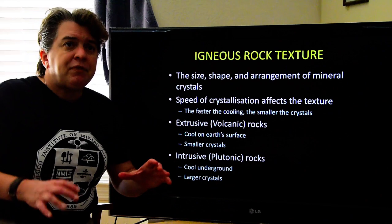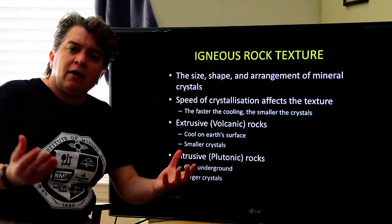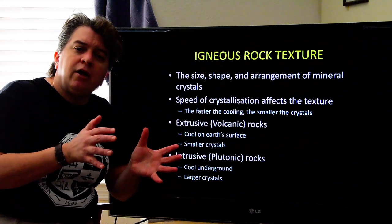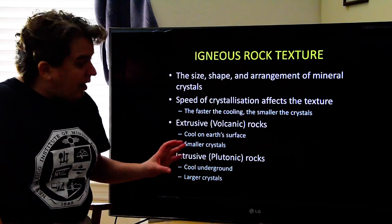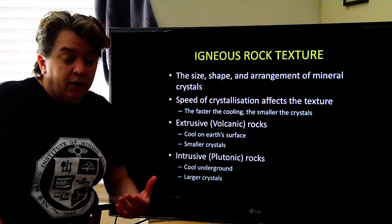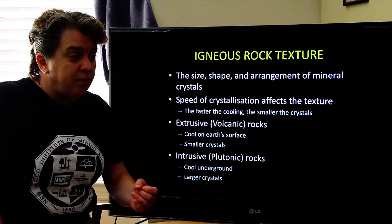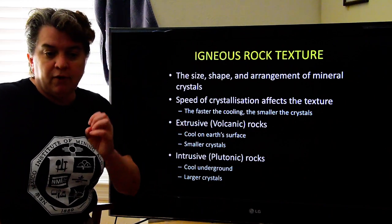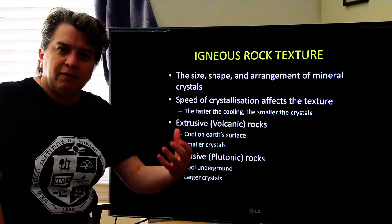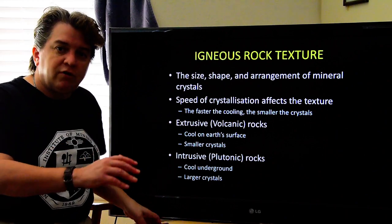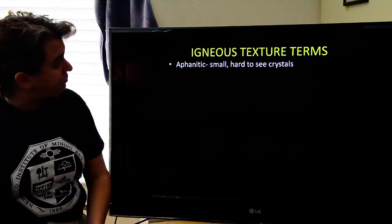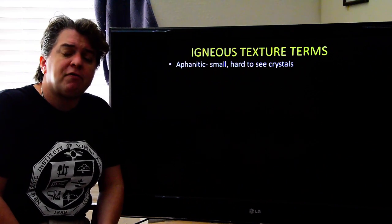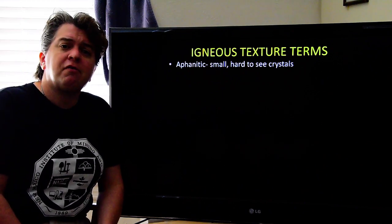Intrusive rocks are surrounded by a lot of other rock, so they're nicely insulated, and the crystals have time to grow bigger. So when you're looking at an igneous rock, if it has big crystals you can think it formed underground; if it has small crystals, that should tell you it formed on Earth's surface.